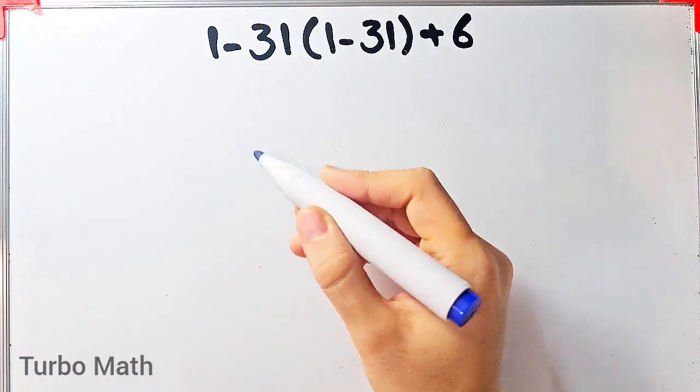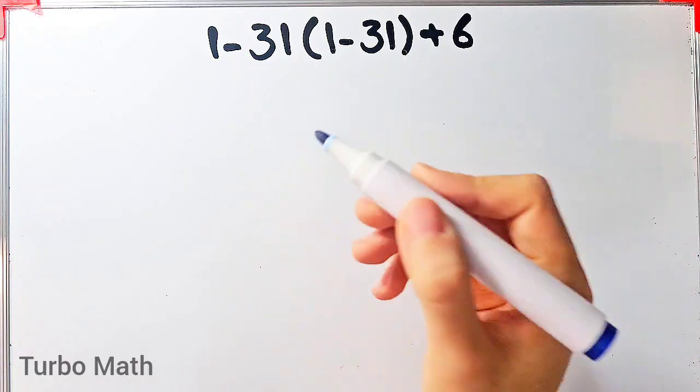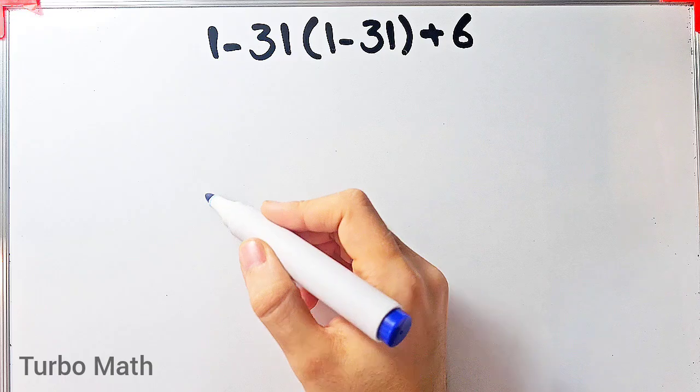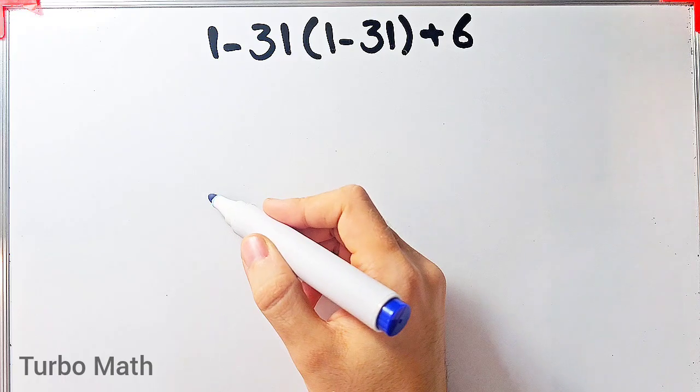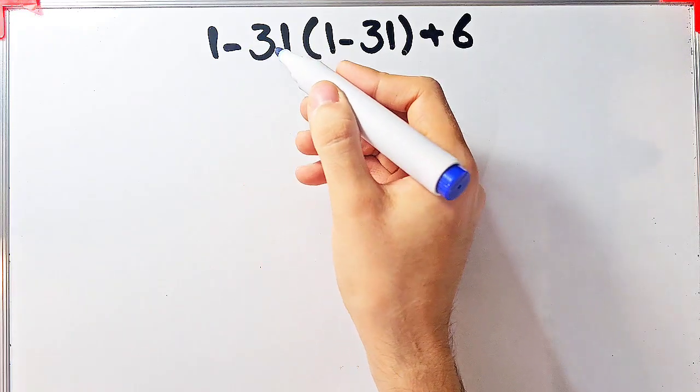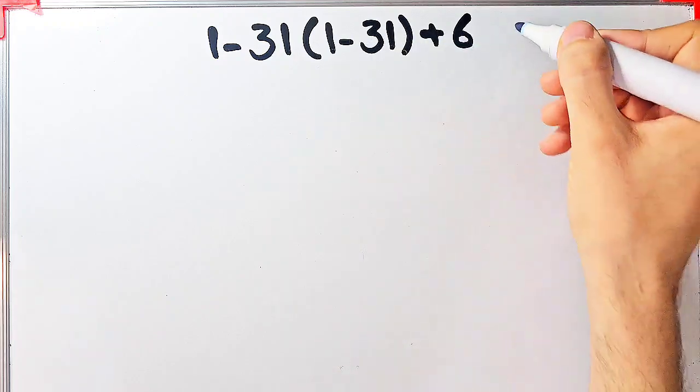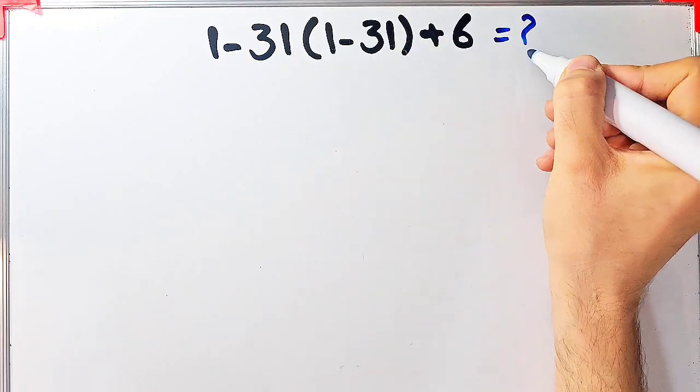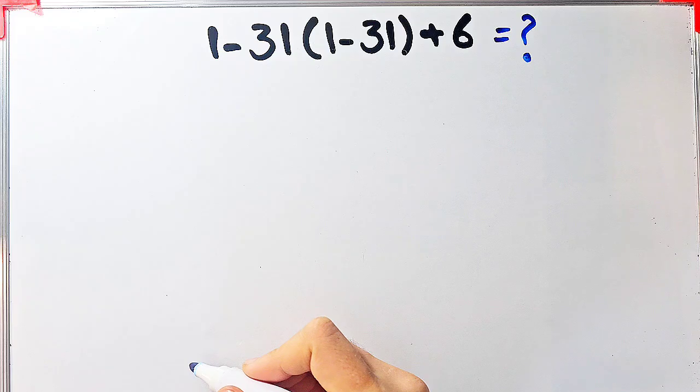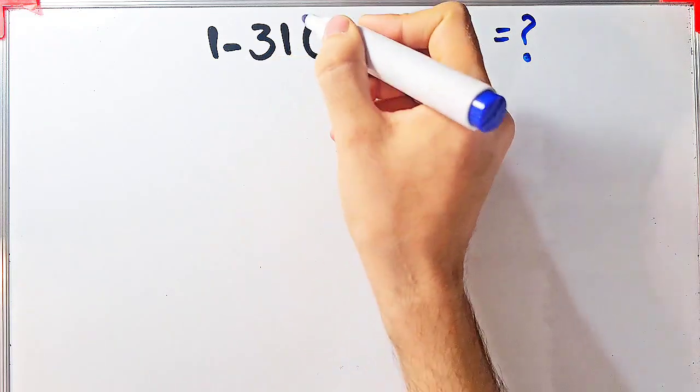Hi friends, welcome to Turbo Math channel. A lot of people get confused when they see this question. They don't know which operation to do first, so they often make a mistake. 1 minus 31 times (1 minus 31) plus 6. What is the answer to this question? Can you solve it? In this question we have subtraction, multiplication, parentheses, and addition.